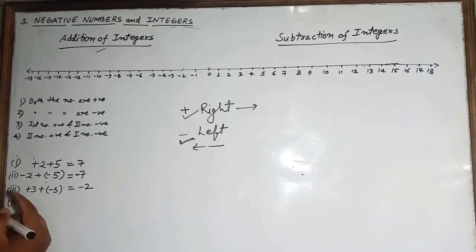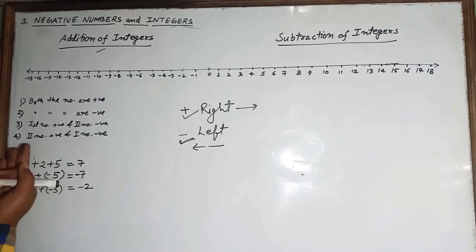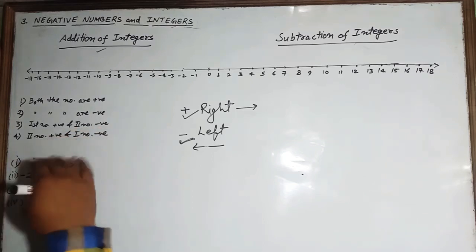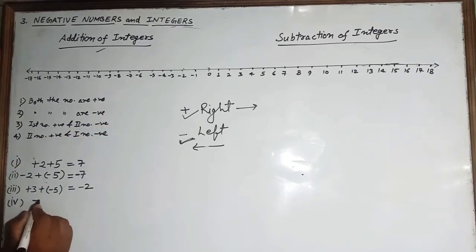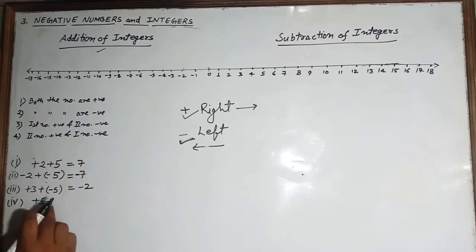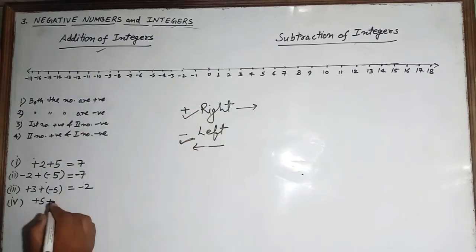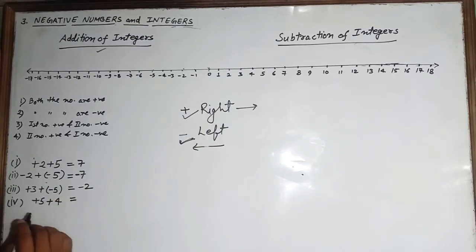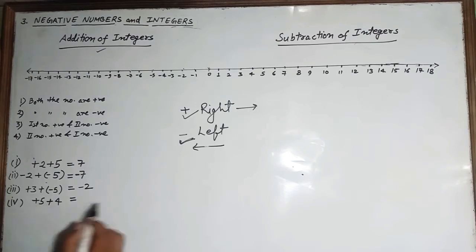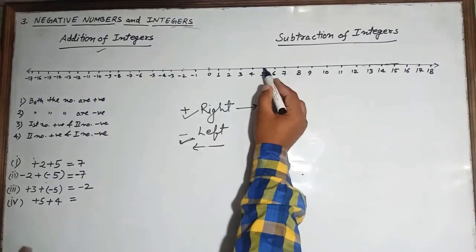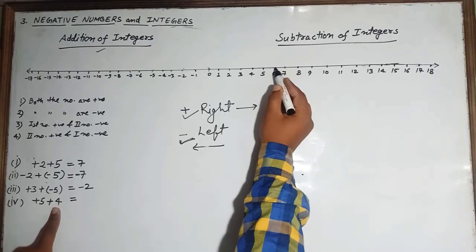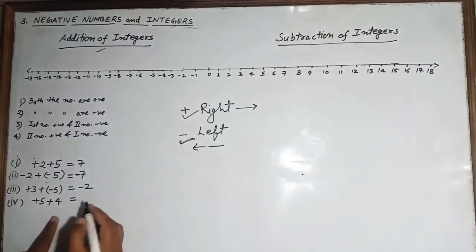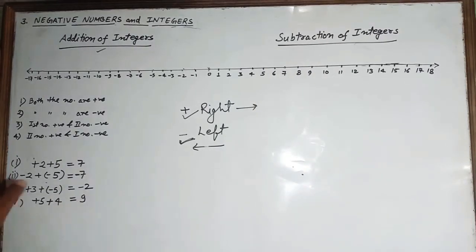The fourth case is where the second number is positive. For example, minus 5 plus 4. We place minus 5 on the number line and move 4 steps to the right — 1, 2, 3, 4 — so our answer will be minus 1.